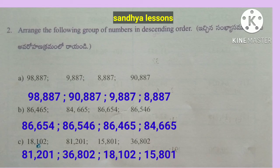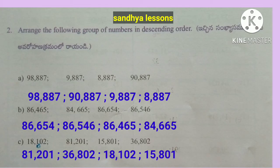Second question: arrange the following groups of numbers in descending order (from big to small). A: 98,887; 90,887; 9,887; 8,887. B: 86,654; 86,546; 86,465; 84,665. C: 81,201; 36,802; 18,102; 15,801.